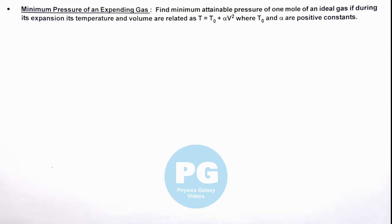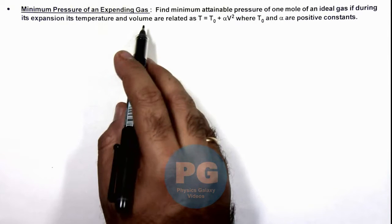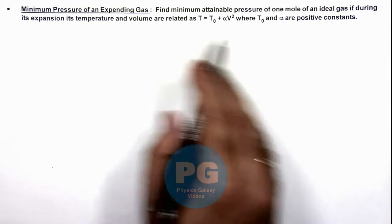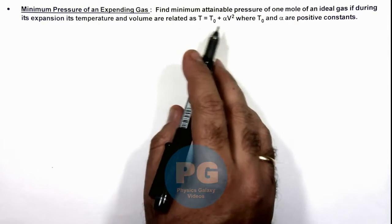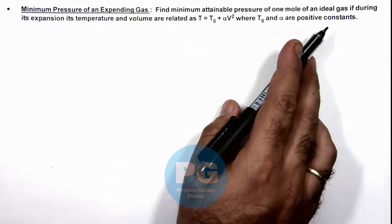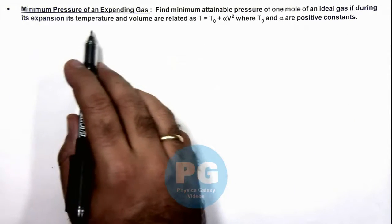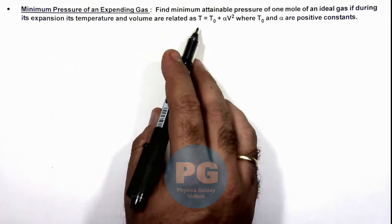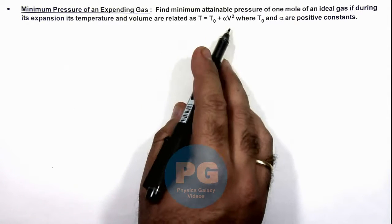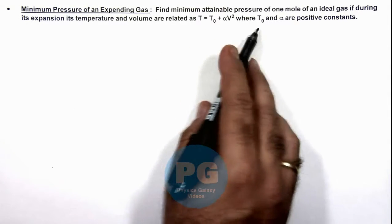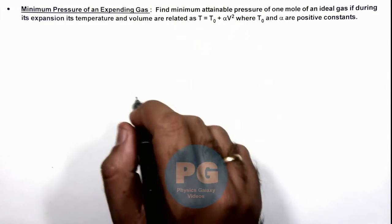In this illustration, we'll be calculating the minimum pressure of an expanding gas. We are given that there is 1 mole of ideal gas, and if during its expansion temperature and volume are related as T₀ + αV², where T₀ and α are constants, we'll be calculating the minimum attainable pressure of this gas.